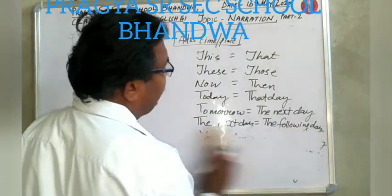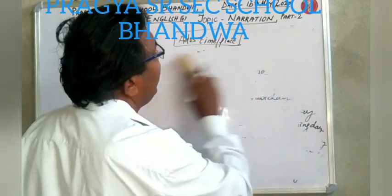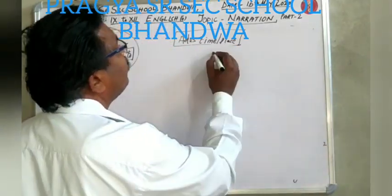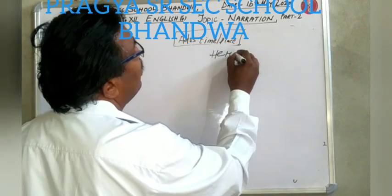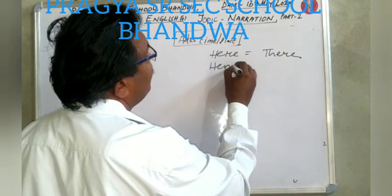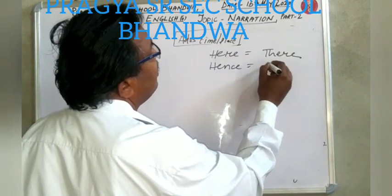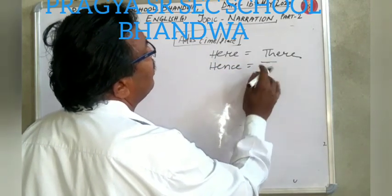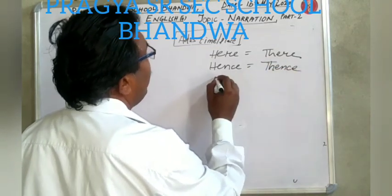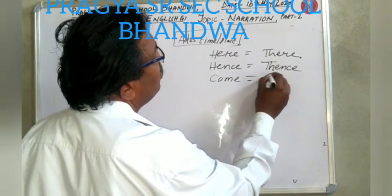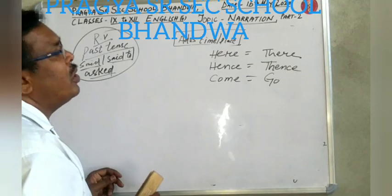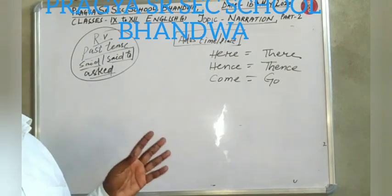'Here' will be changed to 'there'. 'Hence' will be changed to 'thence'. 'Come' will be changed to 'go'. All such type of changes will be done in the adverbs of time or place showing nearness.